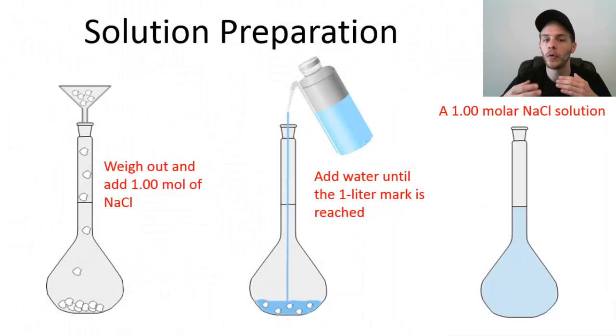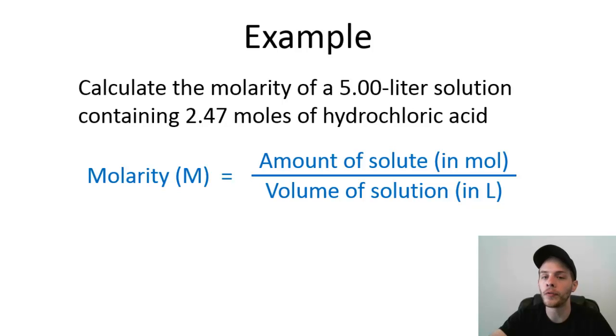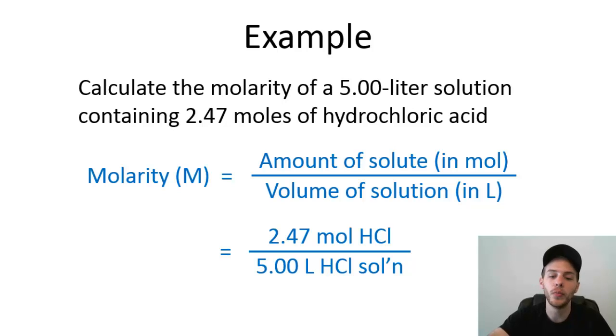In the next slide, I'm going to go over a simple calculation involving molarity, and then we'll be all done. This problem says: calculate the molarity of a 5.00 liter solution containing 2.47 moles of hydrochloric acid. Remember, the formula for molarity is simply the moles of solute over the liters of solution. We have 2.47 moles of our solute, which is HCl, divided by 5.00 liters of the HCl solution, and that results in a molarity of 0.494. So this is a 0.494 molar hydrochloric acid solution.